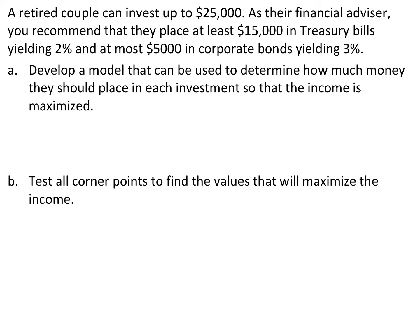Now we're getting into the linear programming part. We want to develop a model to determine how much money they should place in each investment so that income is maximized. We want to write a function for the income using the interest rates. The income will be equal to 0.02 times the amount put in treasury bills plus 0.03 times the amount put in corporate bonds.